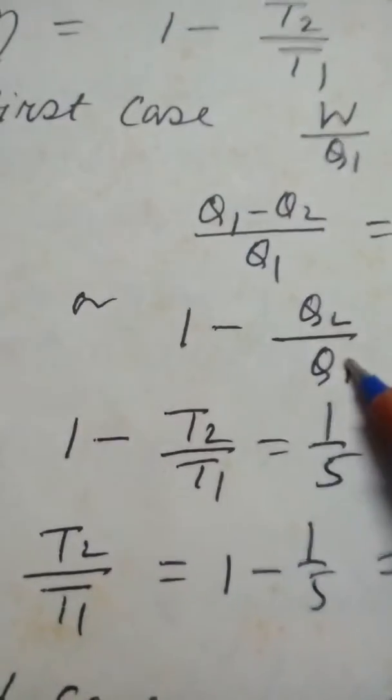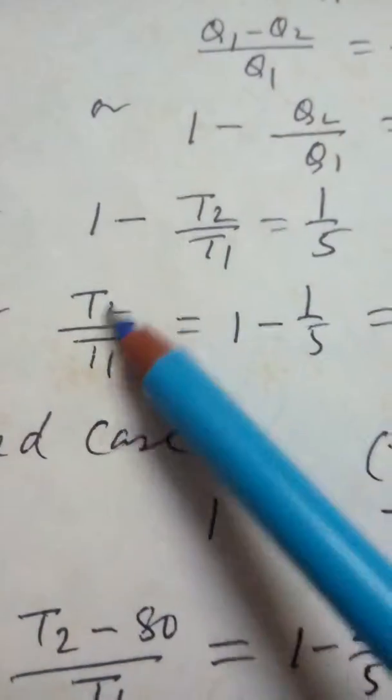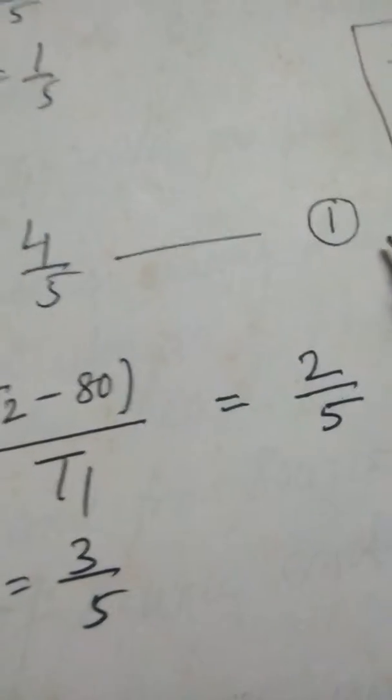That means 1 - T2/T1 = 1/5. And this T2/T1 will be equal to 4/5. So, this is equation number 1.